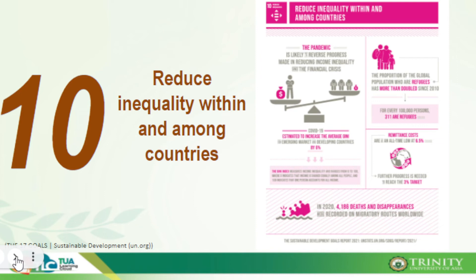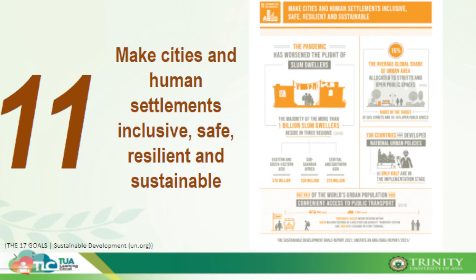The pandemic has caused reverse progress in providing equal opportunities and equal income for everybody. SDG number eleven is 'Sustainable Cities and Communities' — to make cities and human settlements inclusive, safe, resilient, and sustainable. The pandemic has worsened the plight of slum dwellers, with more than one billion slum dwellers now recorded.